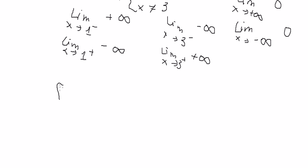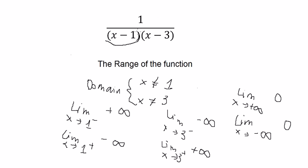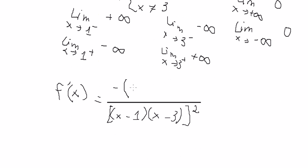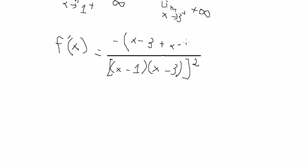Next, we need to find the first derivative of the function. You get x minus 1 multiplied by x minus 3, all to the power of 2. We have a negative here, so we do the first derivative of x minus 1, which gives x minus 3. Then we do the first derivative of x minus 3, which gives x minus 1. And we get x minus 2.